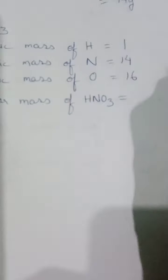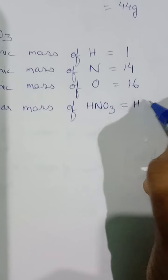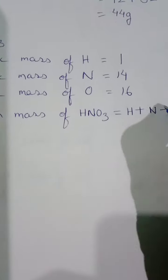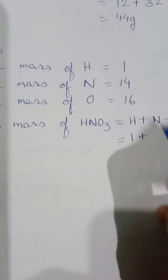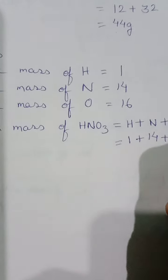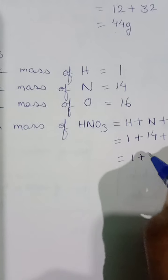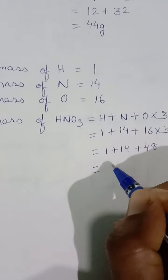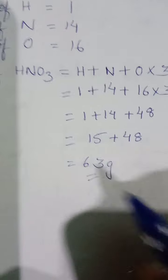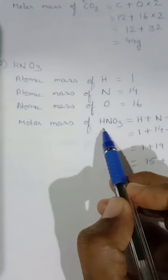Molar mass of nitric acid equals H plus N plus O times 3. H is 1, plus N is 14, plus O is 16 times 3. That's 1 plus 14 plus 48. When you add 15 plus 48, you get 63 grams.